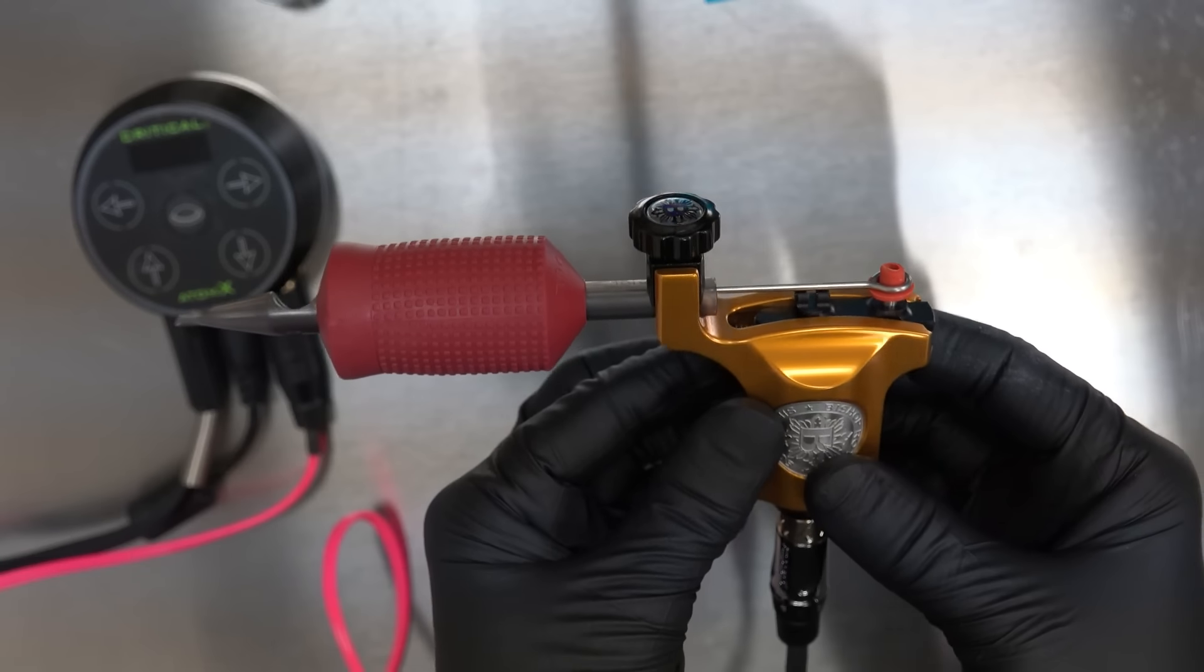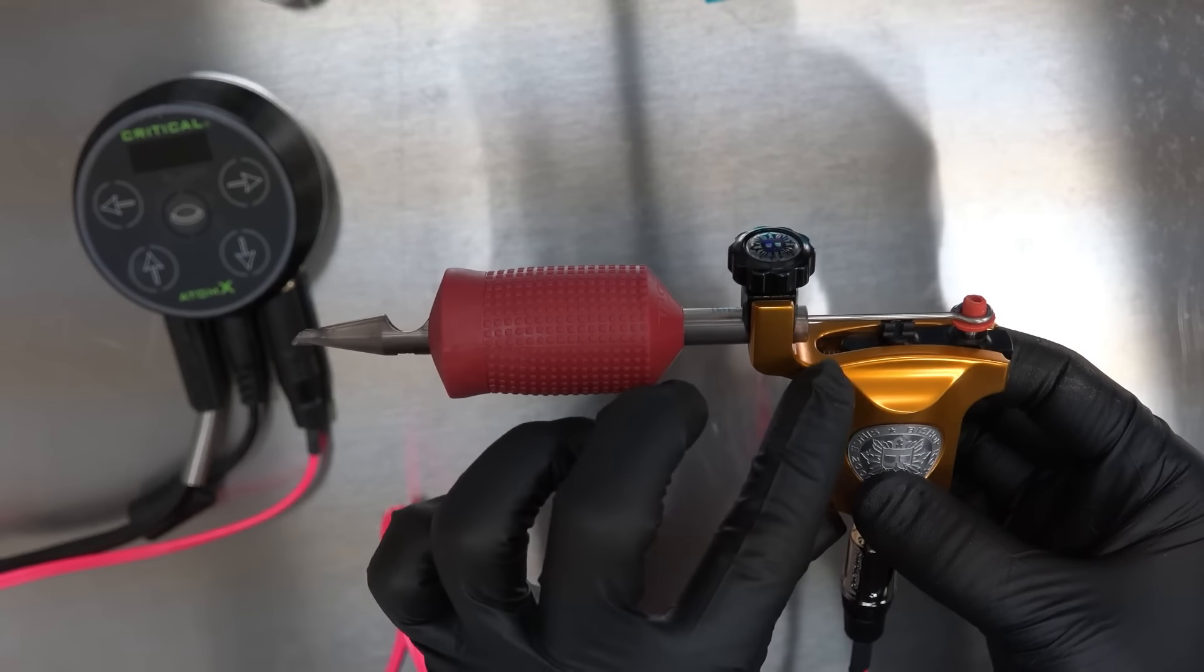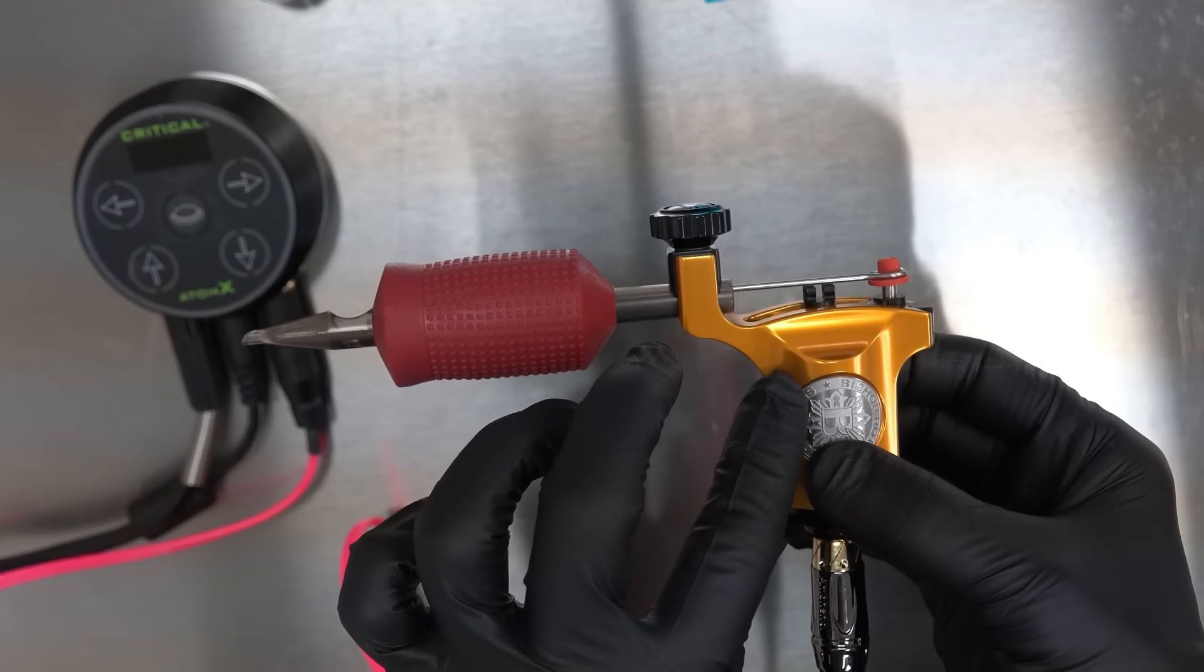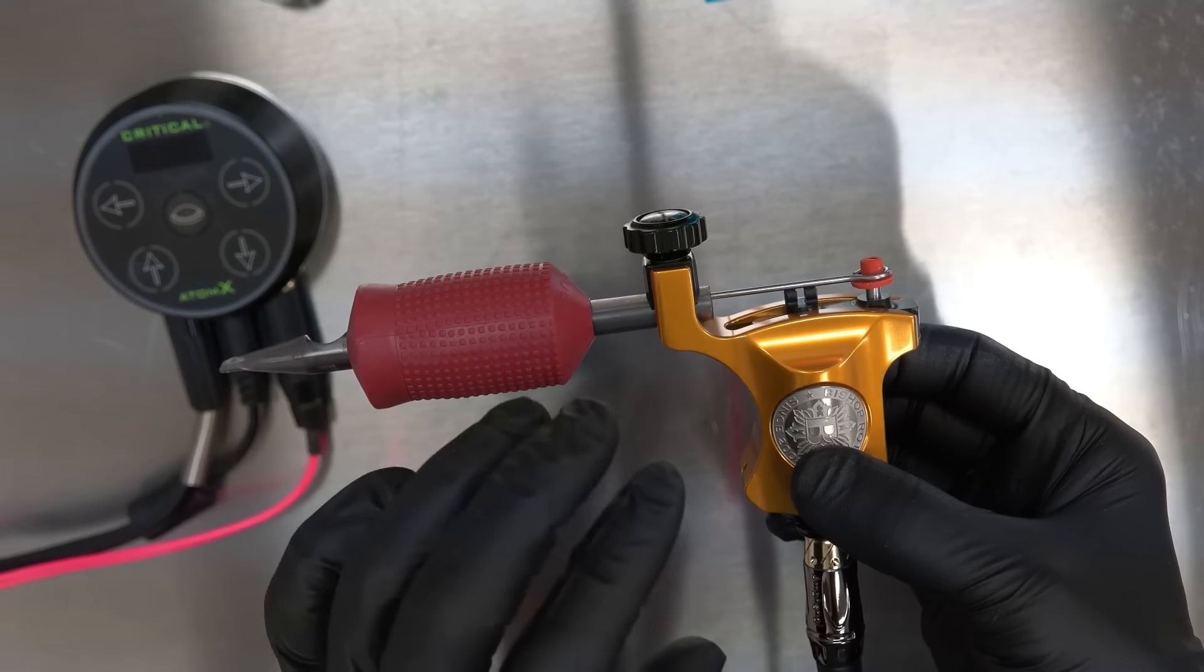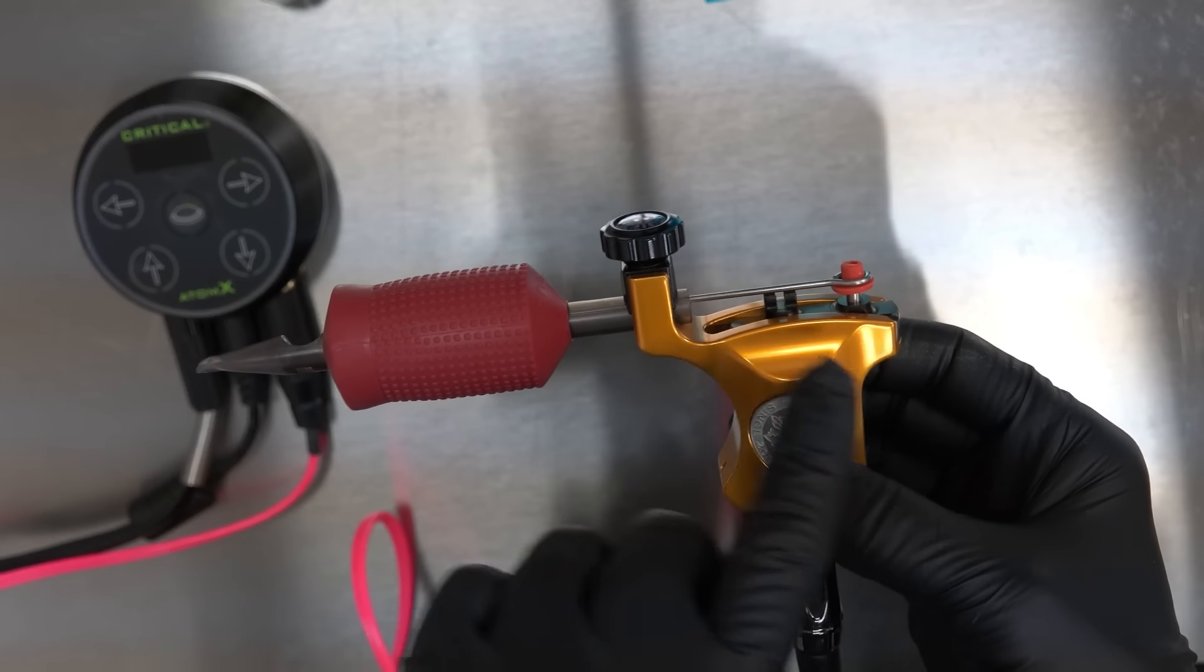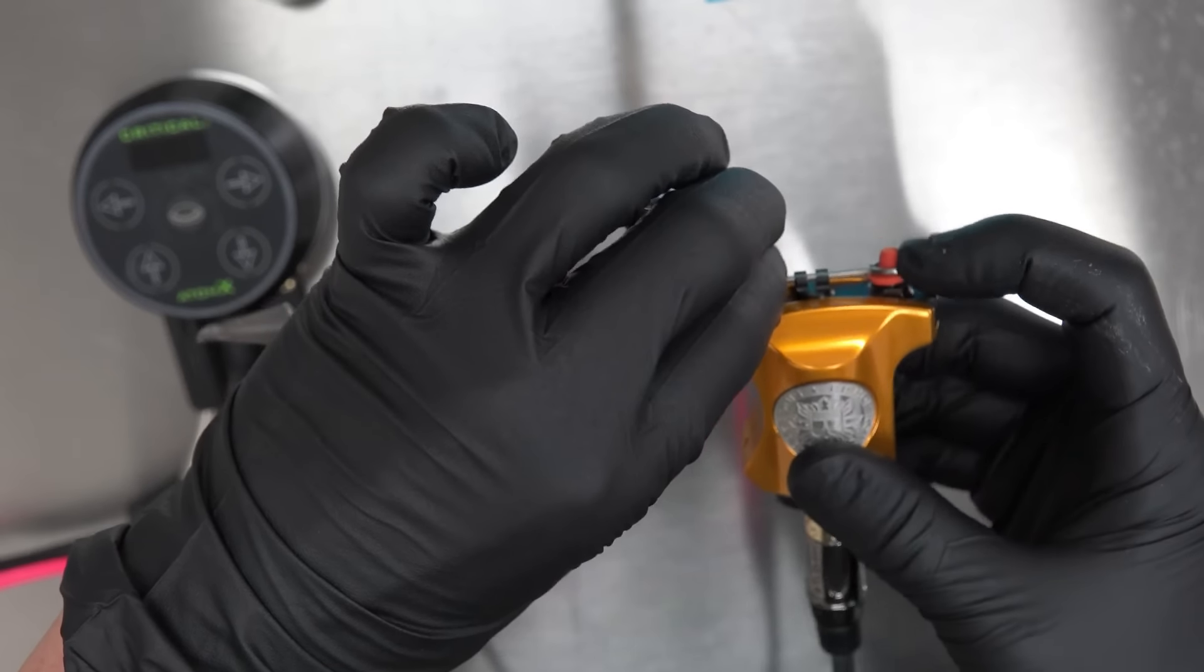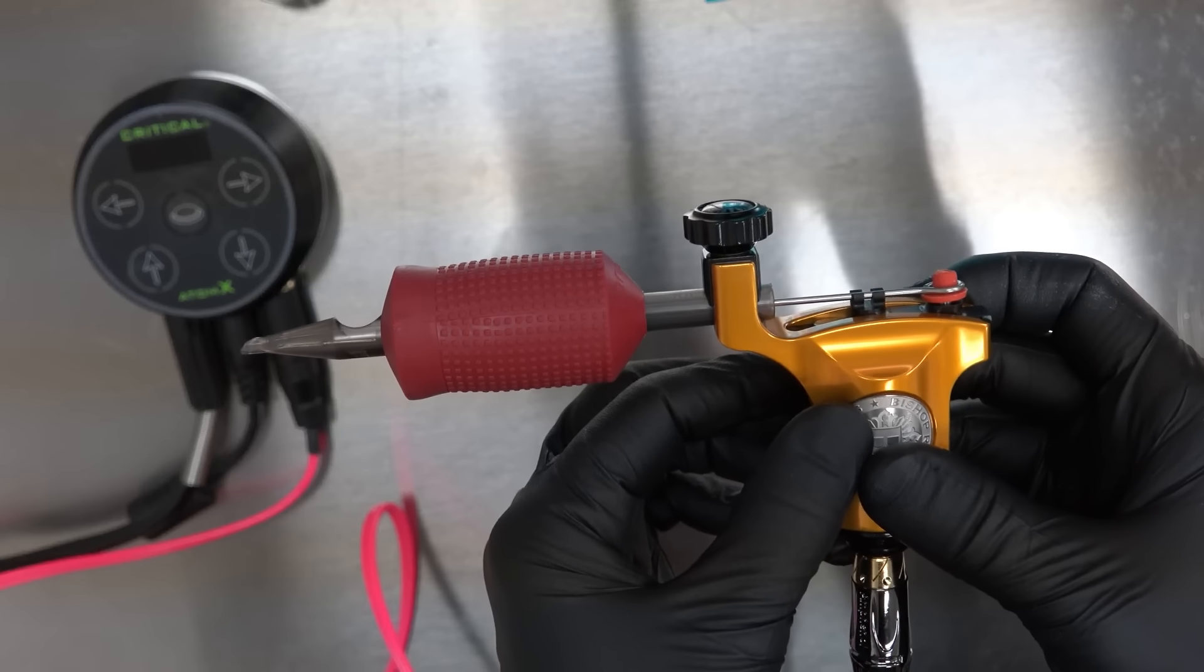Now, one reason I always suggest this machine to people that are new to rotaries is because it's super easy. Right? Some rotaries take rubber bands. Some rotaries have the tension wheel like the Valor. So you've got to fuss with it a little bit. Not the Bishop. You put your needle in just like I showed you. And then see this little click. That's your needle click. You just put your needle. So make sure your post is in and just click it in. That's it. That is it. Alright? Perfect.